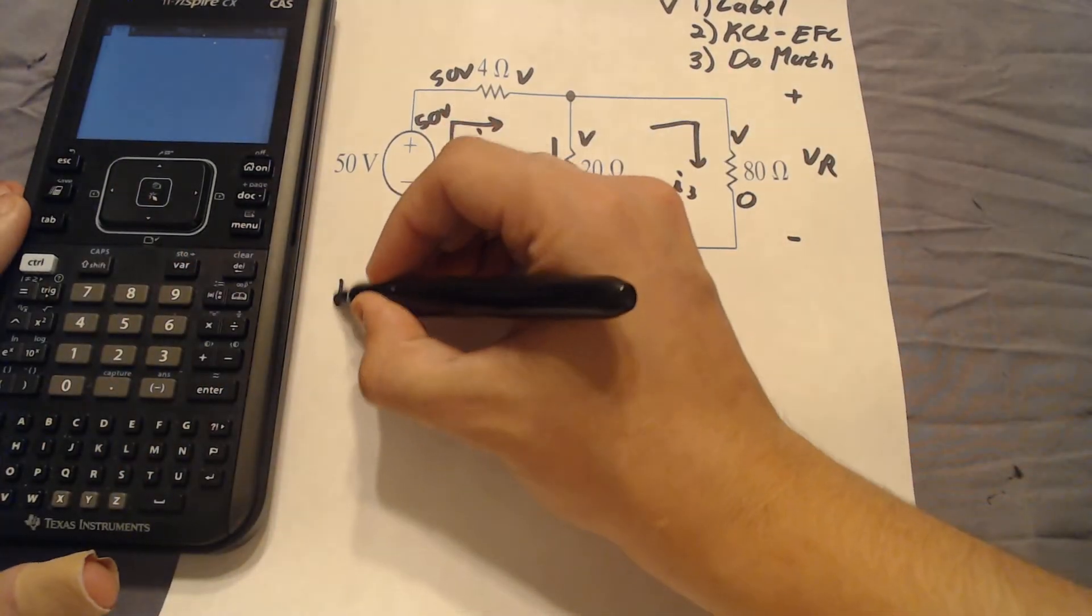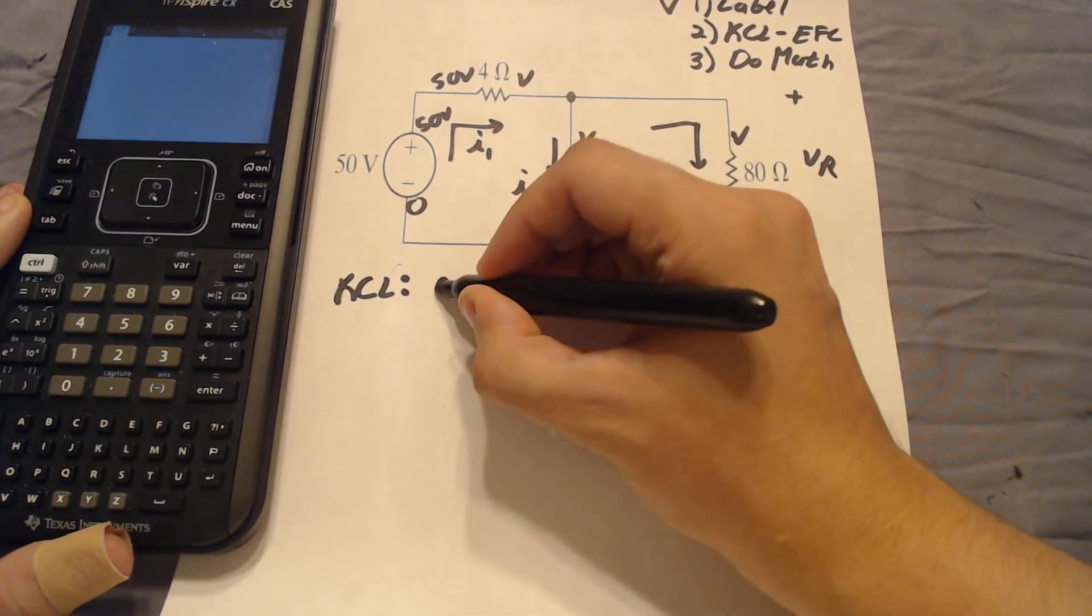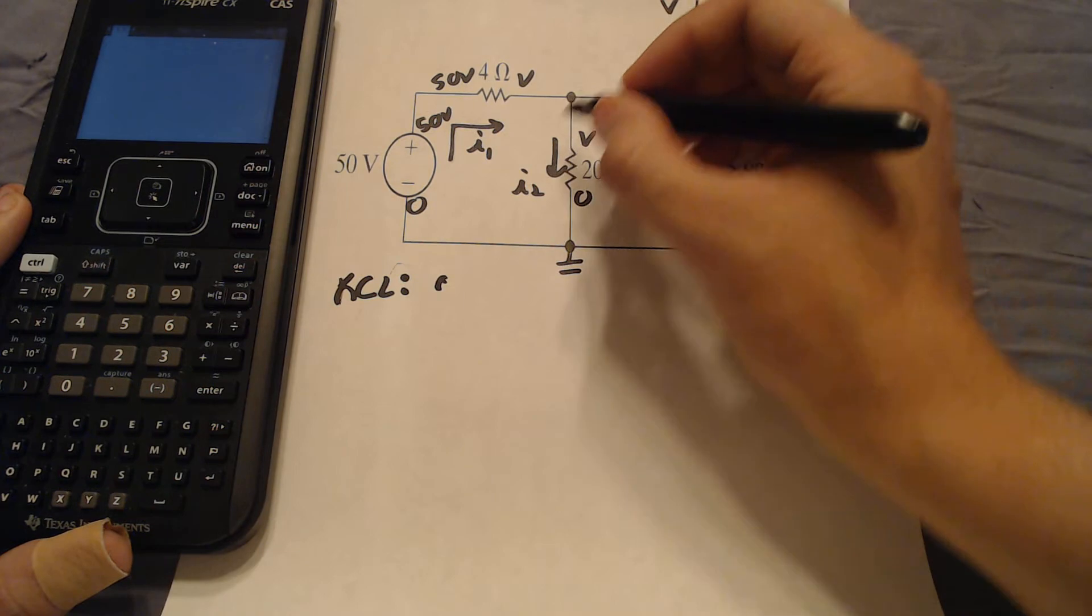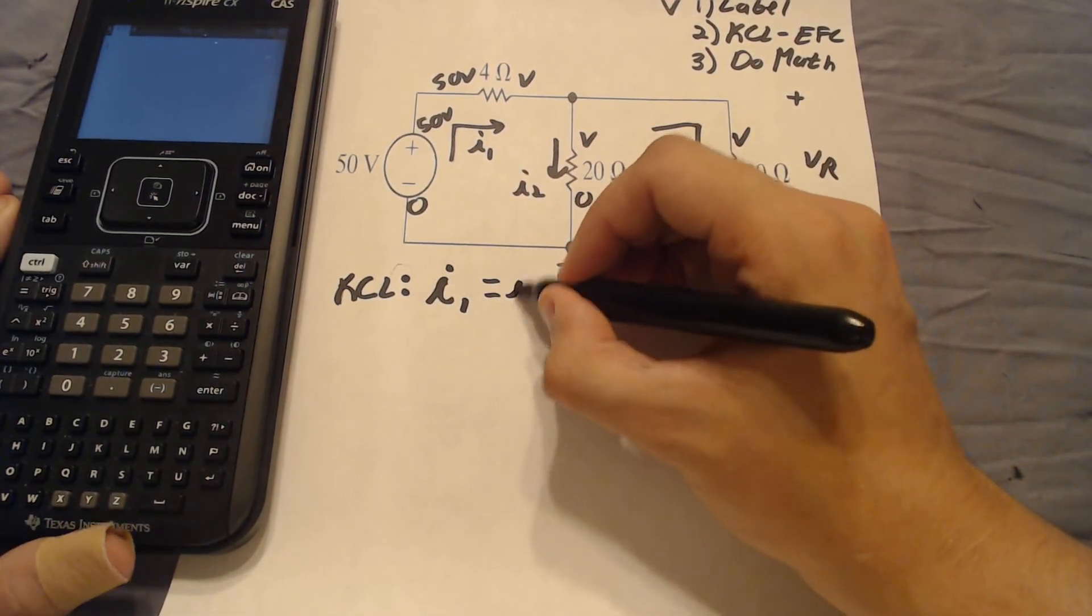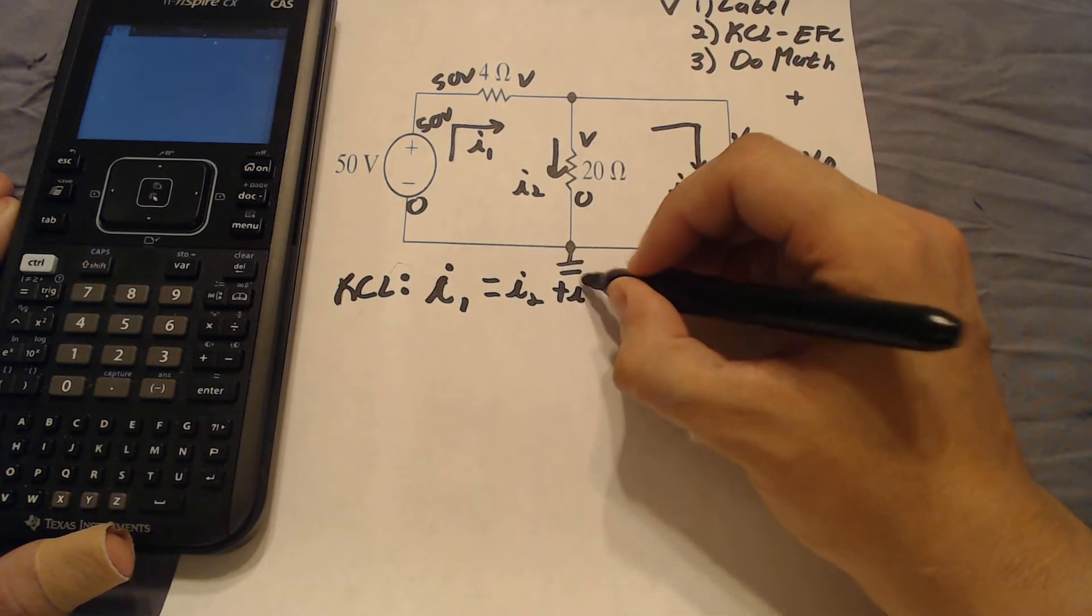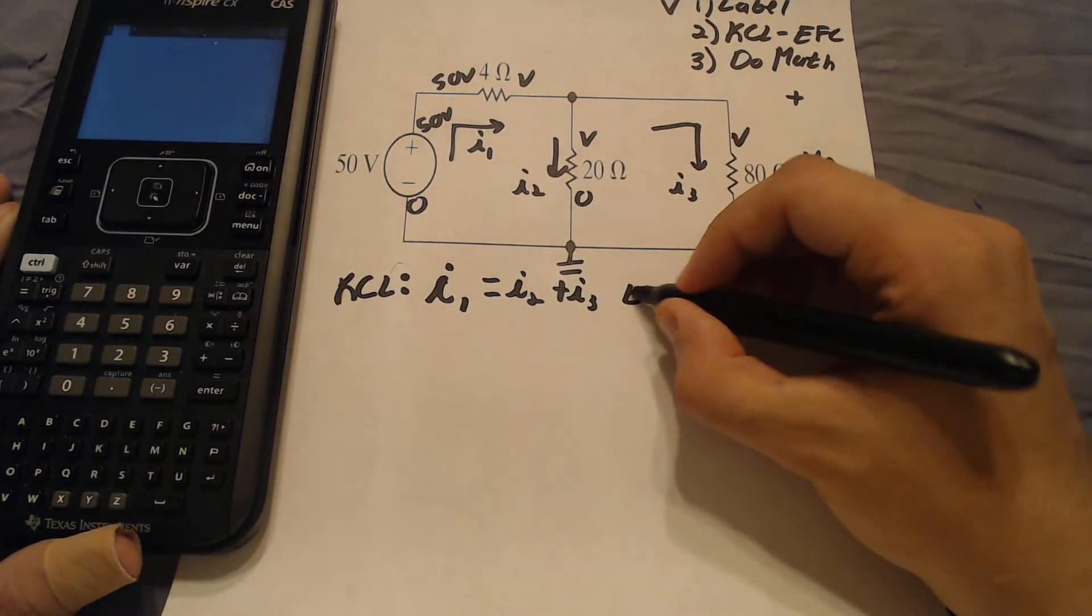So KCL, which stands for Kirchhoff's current law, is performed at nodes. So the only relevant node here is this node up here. So I1 goes into that node, and I2 and I3 come out of that node. And that's all the KCL we have to do for this circuit.